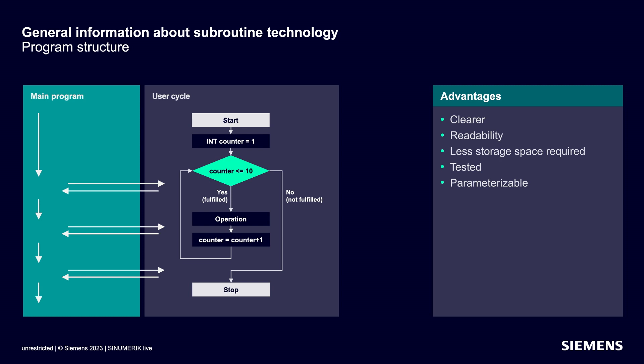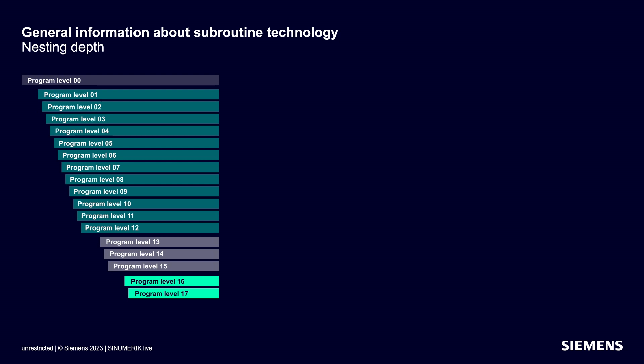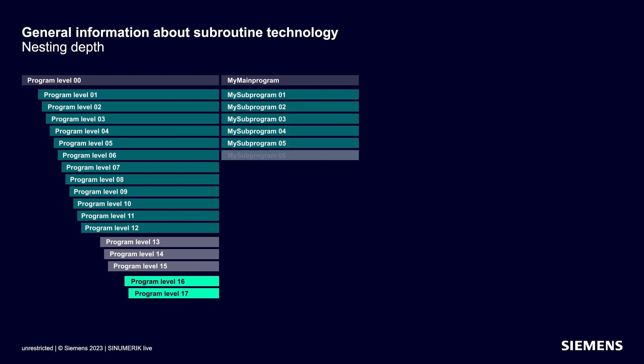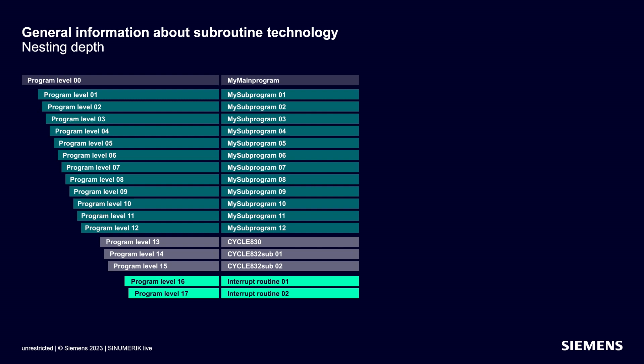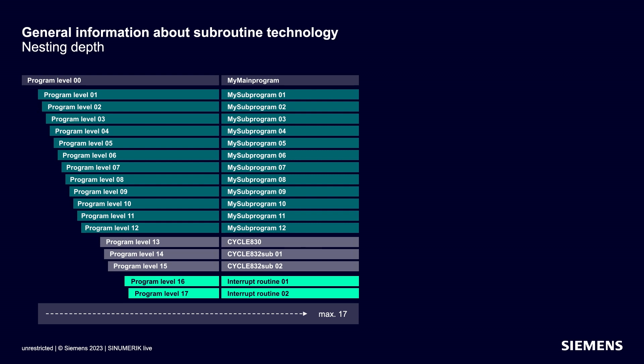Let's take a closer look at the nesting structure. The maximum nesting depth of CINEMERIC sub-programs is 17. With the top level, this means that CINEMERIC can manage a total of 18 program levels. Starting from the main program at the top level, we call our first sub-program, and from that sub-program we can call another sub-program and so on — a total of 12 sub-programs. Up to three additional program levels are provided for CINEMERIC technology cycles, and a further two levels are reserved for interrupt routines, which can be used by tool breakage systems, for example.